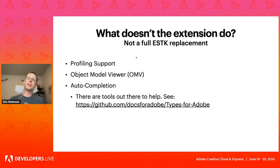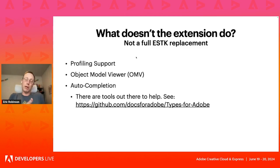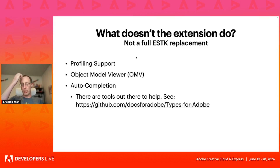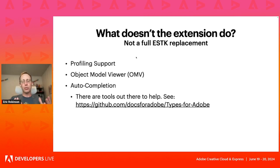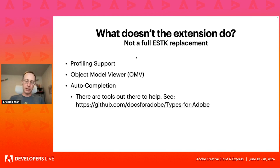Let's talk about what the extension doesn't do. If you're familiar with the ExtendScript Toolkit — the old application that supported ExtendScript debugging — there were some features that the ExtendScript Toolkit (ESTK) supported that the new VS Code extension does not: specifically profiling support, which let you see how much time a function took to run, and the Object Model Viewer, which provided a way to browse the DOM of a connected host application like Premiere Pro or InDesign. That does not exist in this extension, unfortunately.